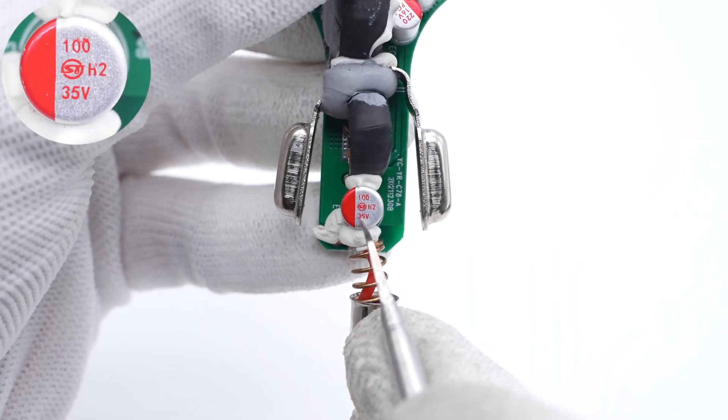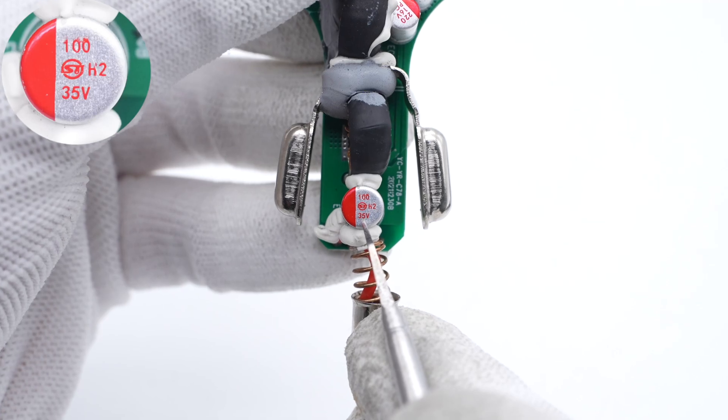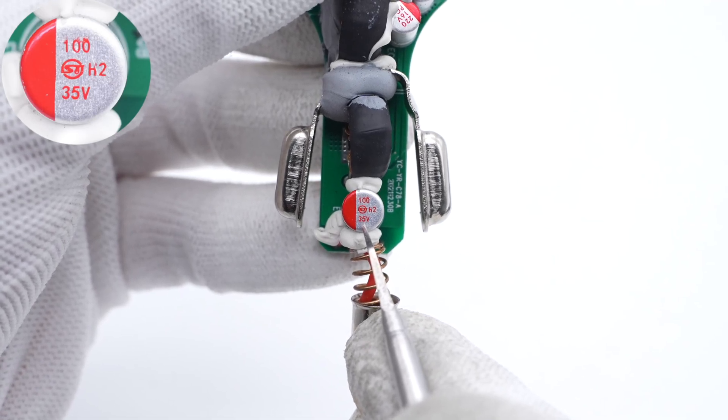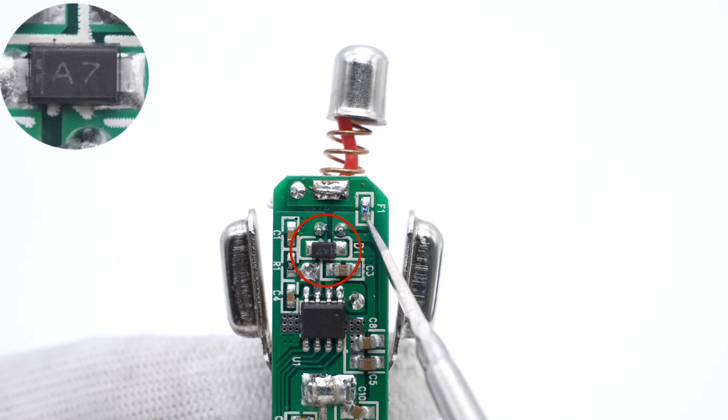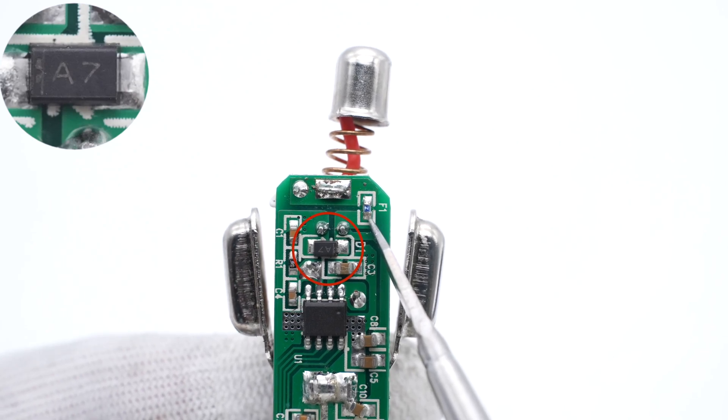The solid capacitor for input filtering is from Shentong Electronics, 100μF, 35V. This diode is connected to the input filter capacitor for reverse polarity protection.